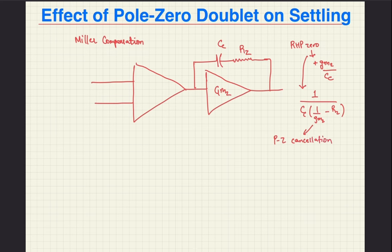With that brief background in place, let's look at what a pole-zero doublet is and briefly analyze its implications on the settling of a negative feedback system. The reference for this video is this seminal paper by Dr. Kamath published in JSSC in 1974.